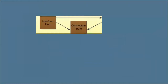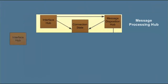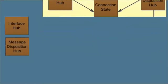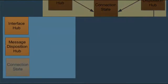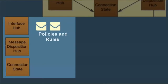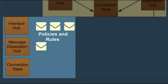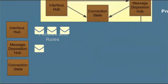Messages are routed to the Message Processing Hub, which consists of the following components: the Interface Hub, the Message Disposition Hub, and Current Message Connection State. The Interface Hub holds messages for processing. Messages wait in the Interface Hub while the remaining steps take place. During the remaining steps, policies and rules make decisions regarding message disposition. The current message connection state is updated by the various modules, and messages that have a disposition move to the Message Disposition Hub for final disposition according to configured policies and rules.